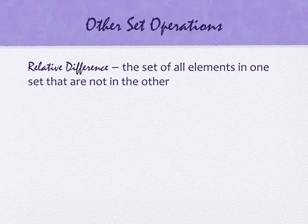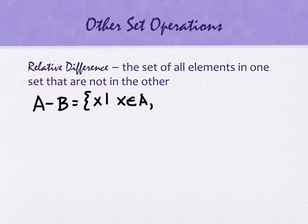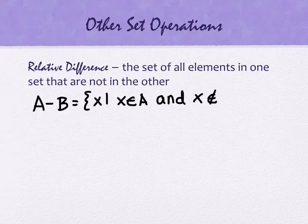Oh, I'm sorry. One more definition before we get to the example. I apologize. Relative difference. A relative difference is the set of all elements in one set that are not in the other. It kind of looks like subtraction when we write this one down. It looks like A minus B. And this is the set of all items X such that X is in A but X is not in B.